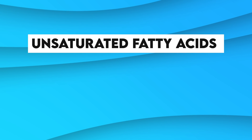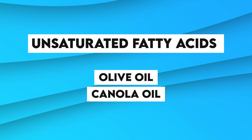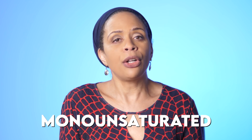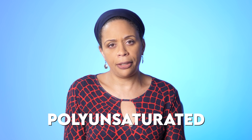Unsaturated fatty acids are liquids at room temperature. Examples of these are olive oil, canola oil, and sunflower oil. If only one hydrogen is missing, or there's one seat left on the bus, it's called monounsaturated. If there are multiple seats left on the bus for a hydrogen to bind, it's called polyunsaturated.